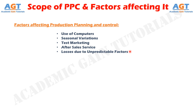Factor number 6 — Losses Due to Predictable Factors: There are losses of inputs due to natural engineering phenomena like production losses, changes in consumption of materials, and occurrence of defectives.